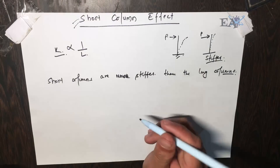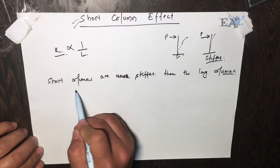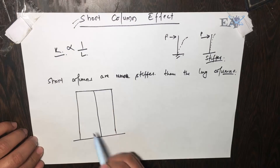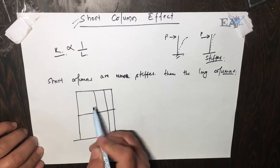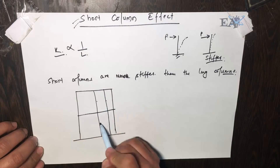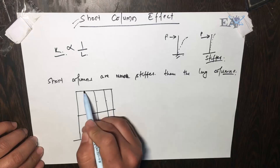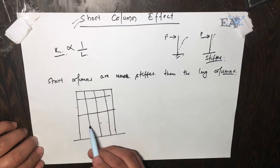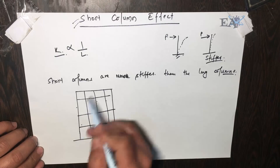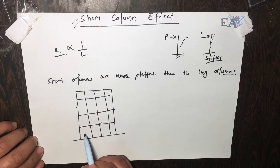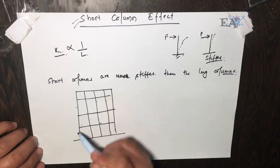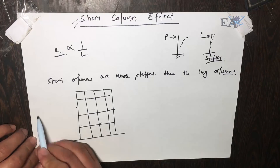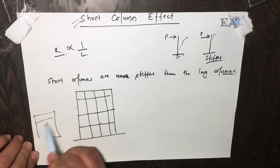Let's assume a condition with a building frame. This is your building, this is the ground, and this is your frame. These are columns, and this is your beam — and here is another beam. These are your floors and columns. Suppose that this portion over here has a staircase, and if you see the plan, it looks like this.